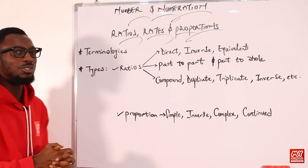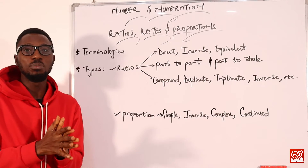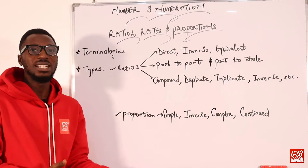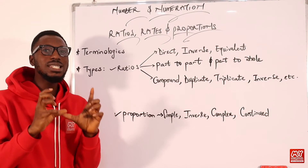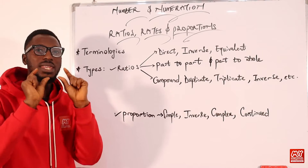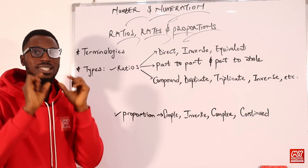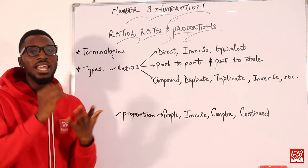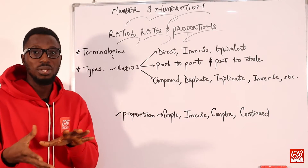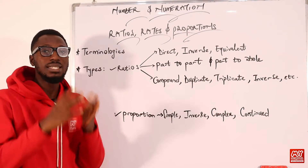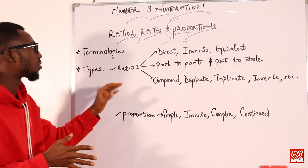How do we define ratios? Ratios are just about the relationship between values, between numbers — we are comparing numbers, comparing quantities of the same kind. Take note of that emphasis: of the same kind. Their units may differ by portions, but it is definitely of the same kind.